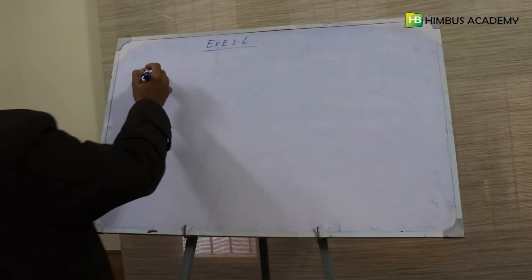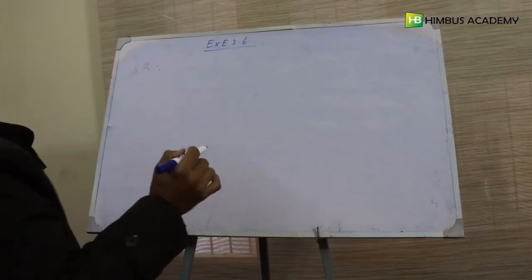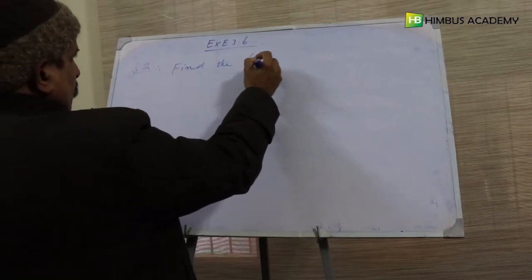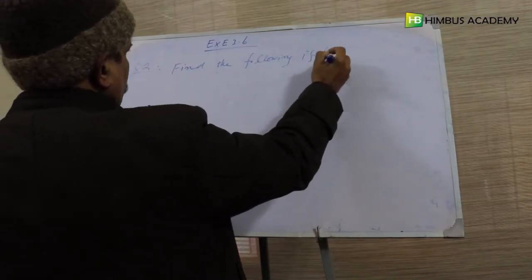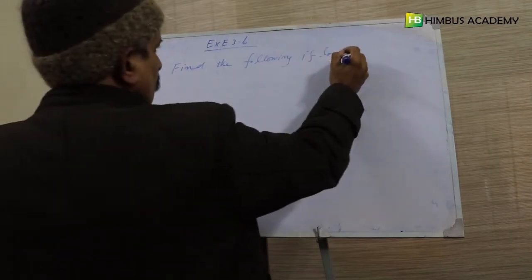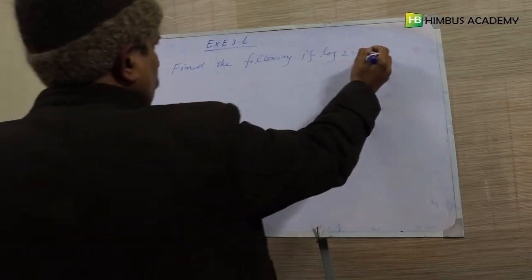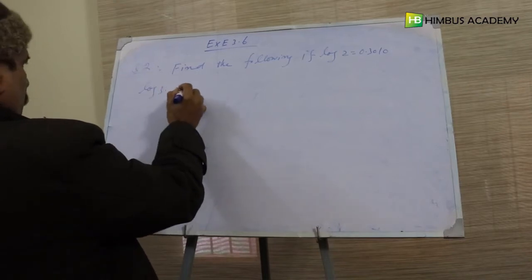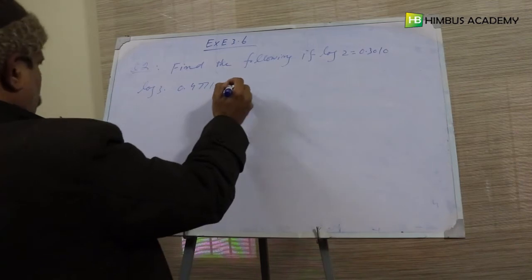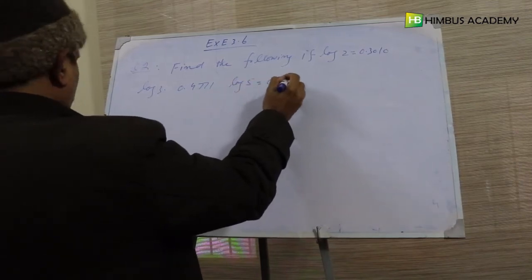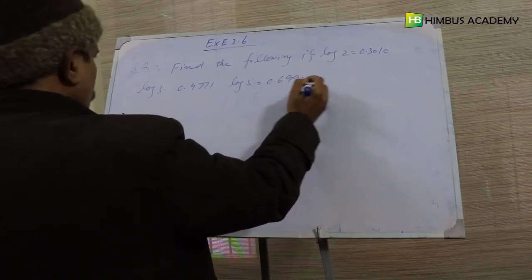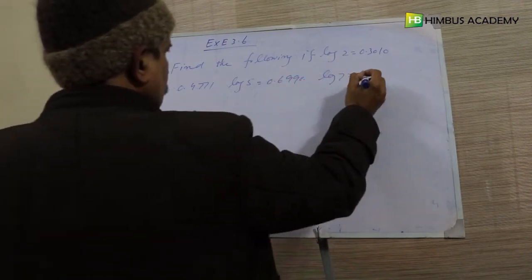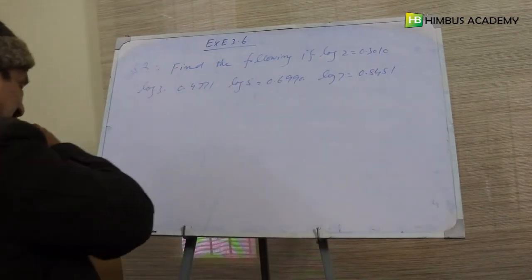Question 2 here, exercise 3.6, find the following. Given values: log of 2 is equal to 0.3010, log 3 is equal to 0.4771, log 5 is equal to 0.6990, log 7 is equal to 0.8451.